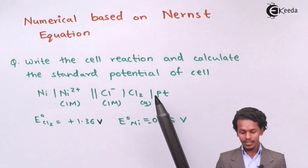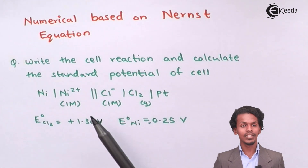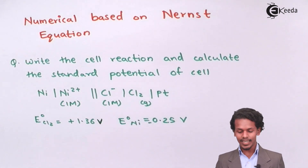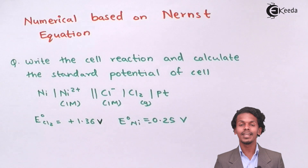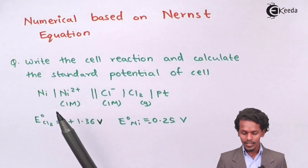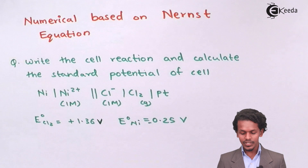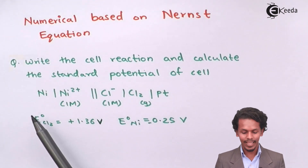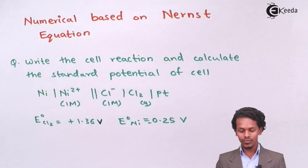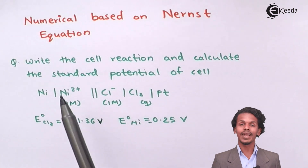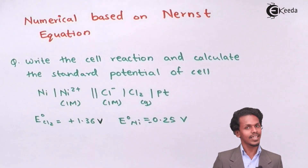The electrode on the right side of the cell formula acts as the cathode. From this cell formula we now know which one is acting as the anode and which one is acting as the cathode, so we can write the cell reaction easily.